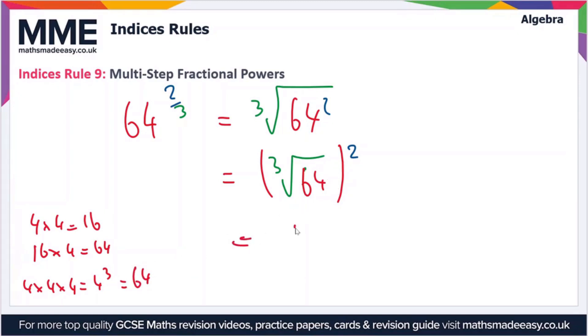So the cube root of 64 is therefore 4, so we can write this expression as 4 squared, and 4 squared is equal to 16. So 64 to the power 2 over 3 is equal to 16.